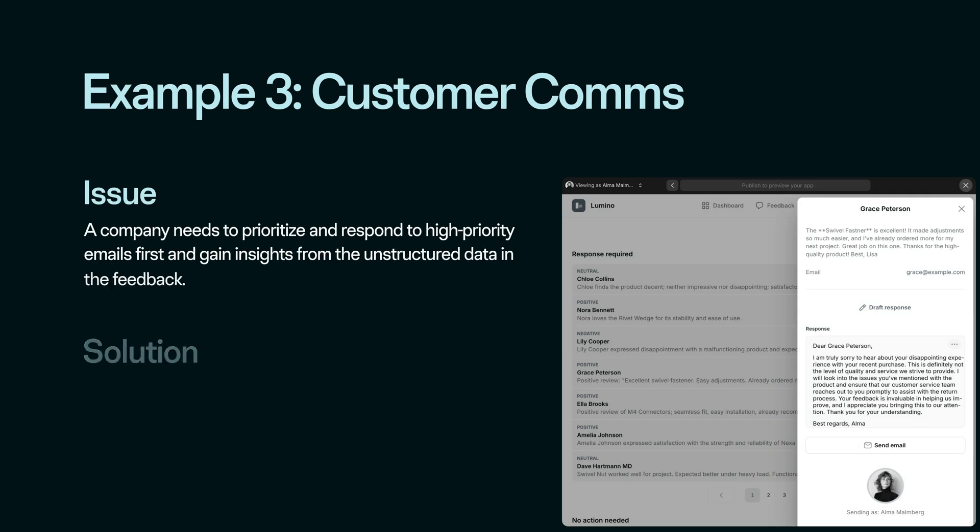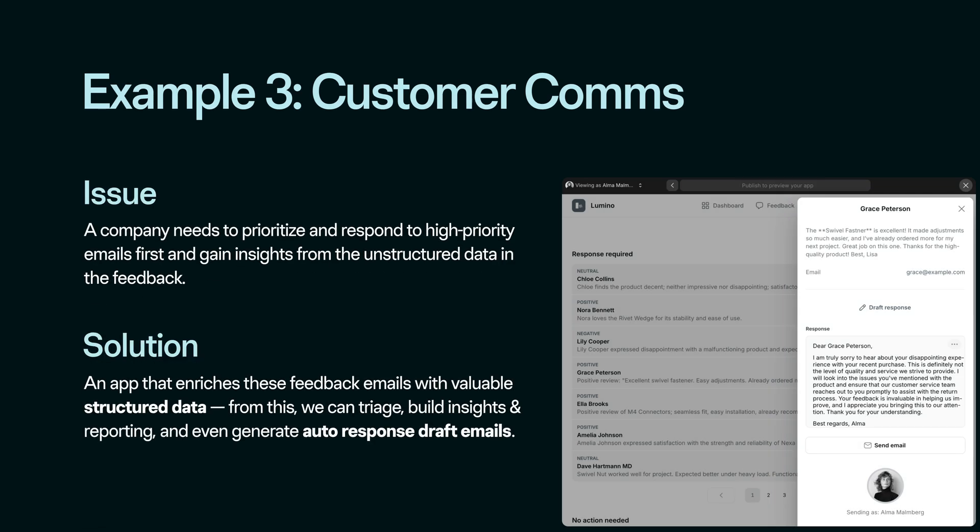The final example is built for customer communications. The issue here is really about unstructured data overload — a company needs to prioritize and respond to high-priority emails first and gain insights from the unstructured data in the feedback. The solution is an app that enriches these feedback emails with valuable structured data, and from this we can triage, build insights and reporting, and even generate auto-response draft emails.